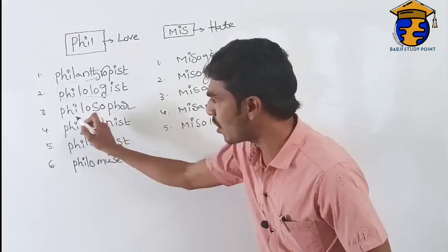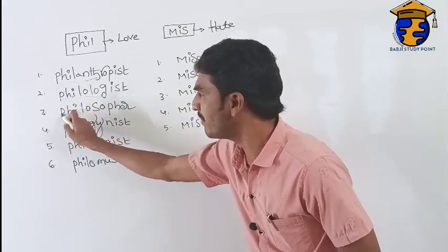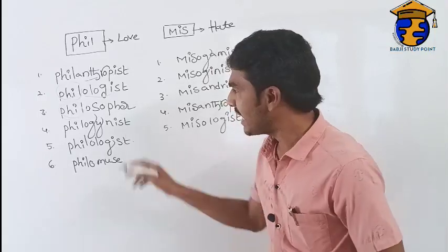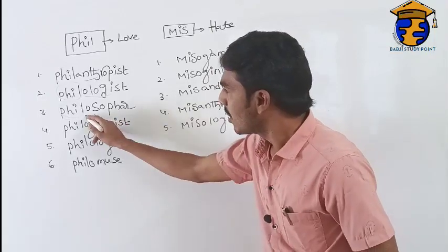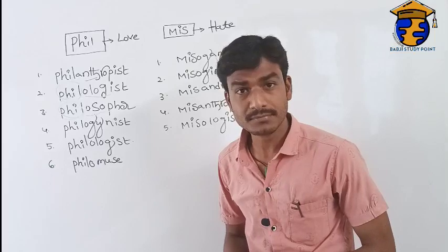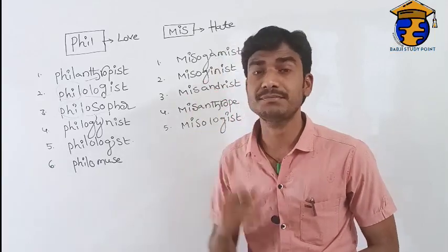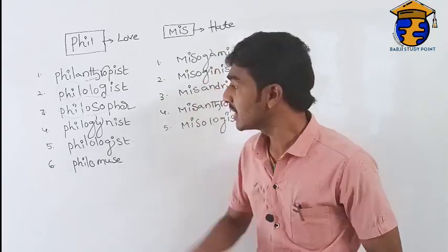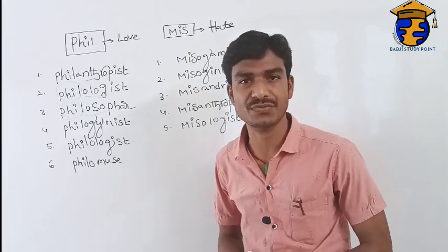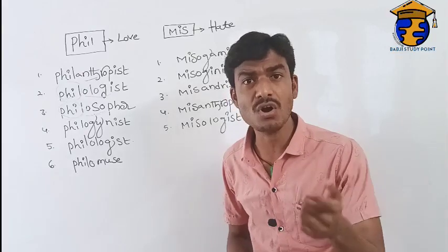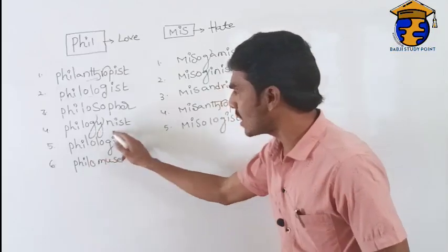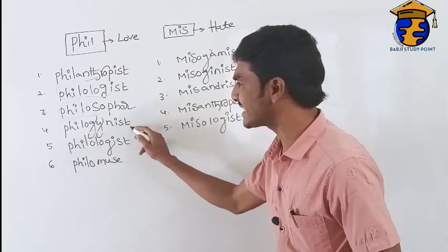The next word is 'philosopher.' The prefix 'phil' means love, and 'sophos' means wisdom. A lover of wisdom is called a philosopher.